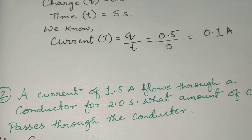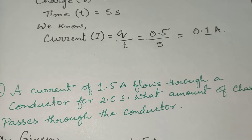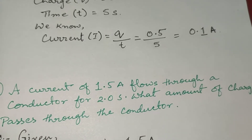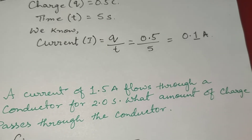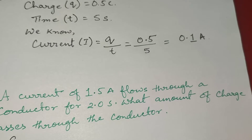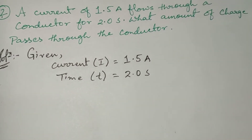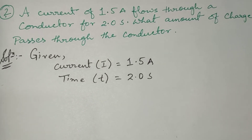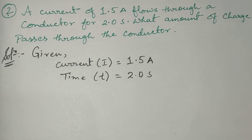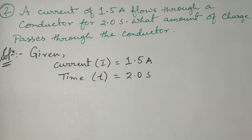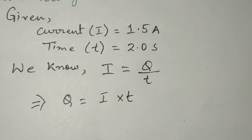Now we come to the second numerical. The question says: a current of 1.5 ampere flows through a conductor for 2.0 seconds. What amount of charge passes through the conductor? Here also we will use the same formula but we have to find a different element. It is given that current I is equal to 1.5 ampere and time is equal to 2.0 seconds.